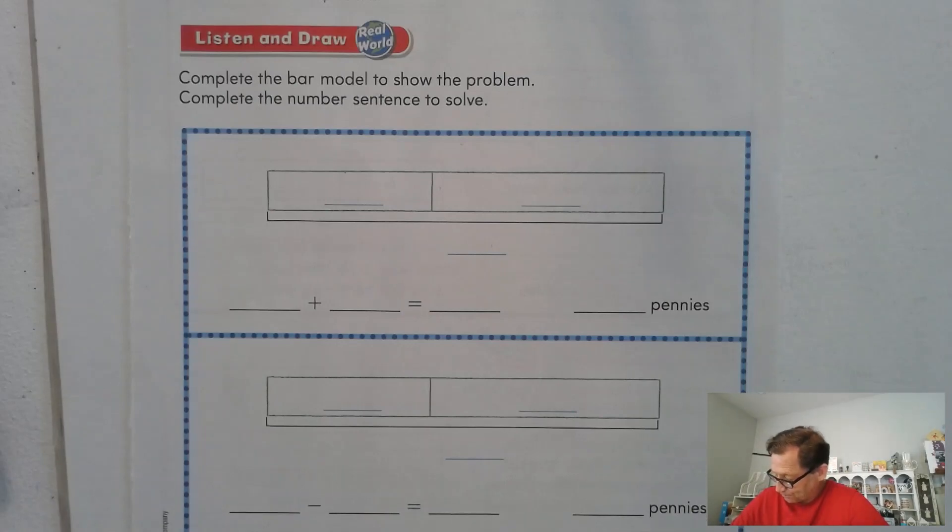Here's the first one. Haley has five pennies in her pocket, and seven pennies in her wallet. How many pennies does she have? Go ahead and pause the video and fill in the bar model for this problem. Again, she has five pennies in her pocket, seven pennies in her wallet. How many pennies does she have?